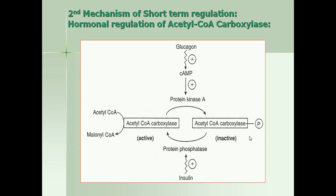The second mechanism of short-term regulation is reversible phosphorylation. In the presence of epinephrine and glucagon, the enzyme is phosphorylated and therefore inactivated. This slide shows that insulin promotes fatty acid synthesis via dephosphorylation by the enzyme protein phosphatase. Acetyl-CoA carboxylase becomes activated in the dephosphorylated form and becomes inactivated in the phosphorylated form. Glucagon and epinephrine activate protein kinase A, which phosphorylates the enzyme and makes it inactive, causing fatty acid synthesis to drop.